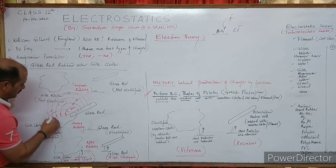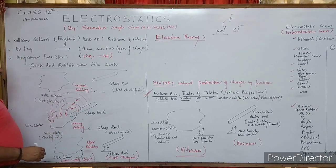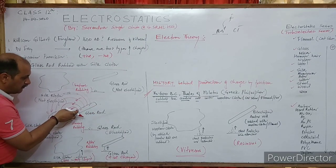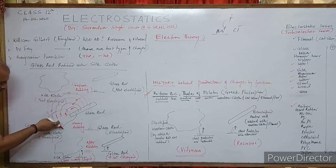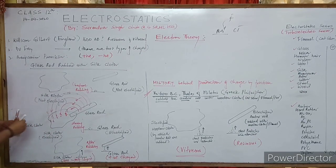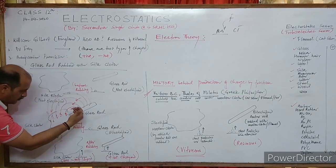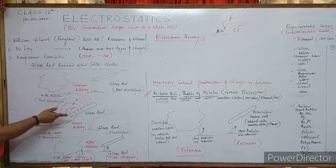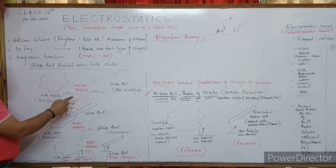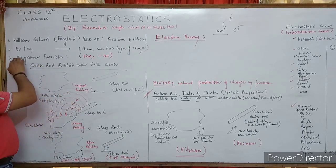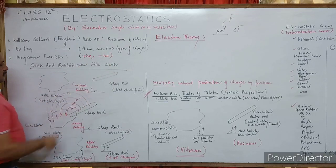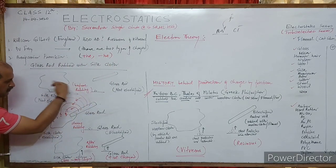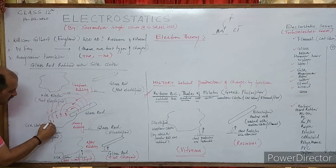For example, if 5 electrons get transferred, it means the glass rod has five electrons less and becomes positively charged, while the silk rod gains five electrons and becomes negatively charged. This is because electrons are found to carry negative charge. During Benjamin Franklin's time, J.J. Thompson and other scientists proved that electrons get transferred, making one body negatively charged.